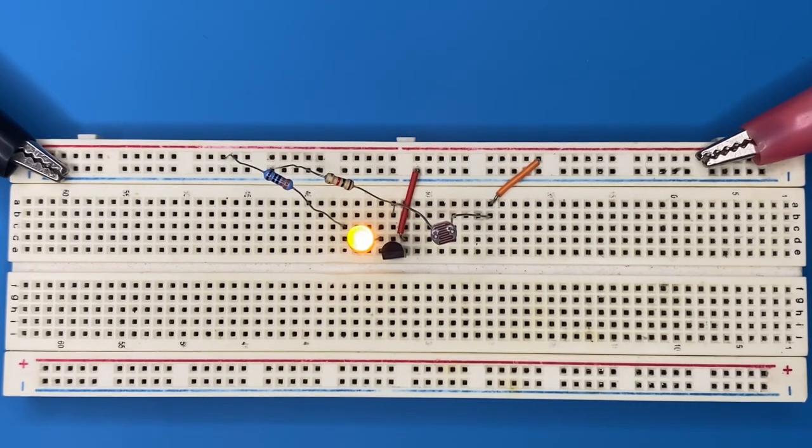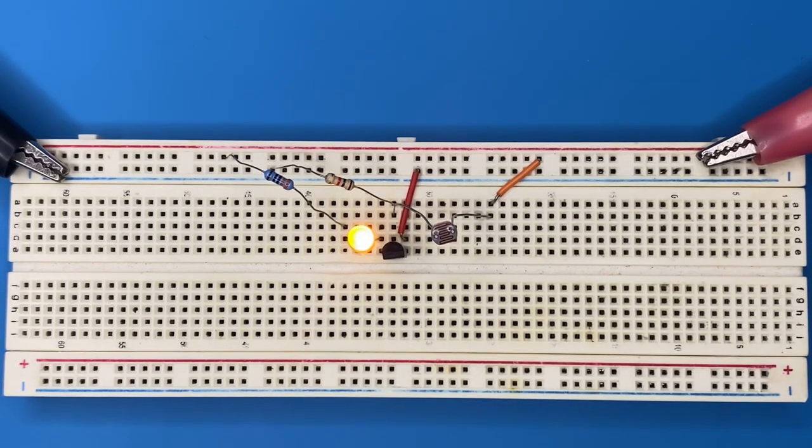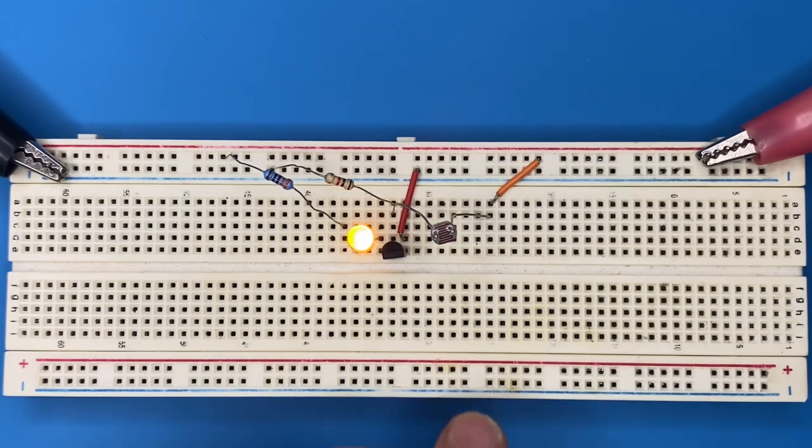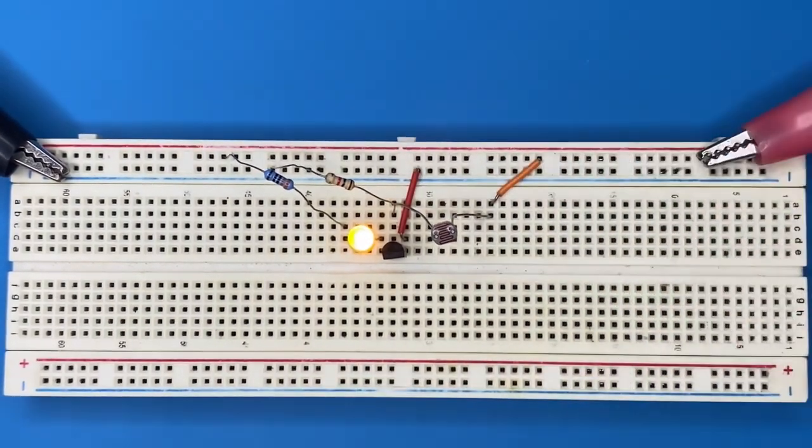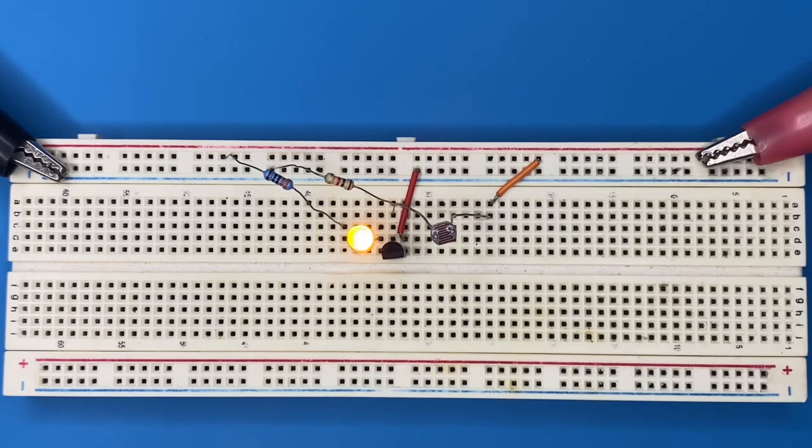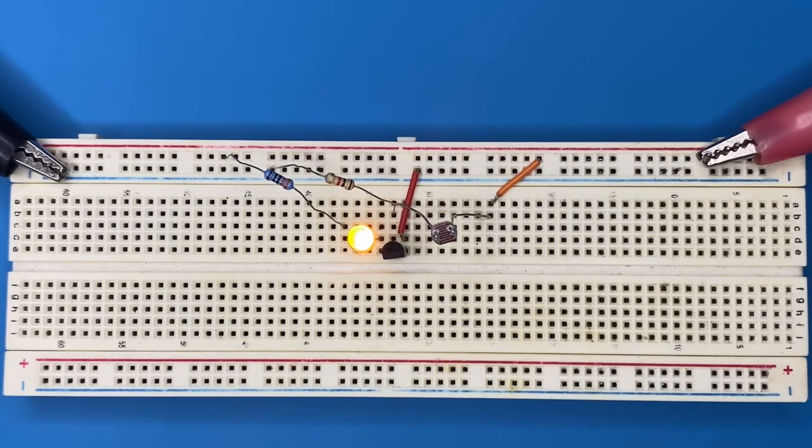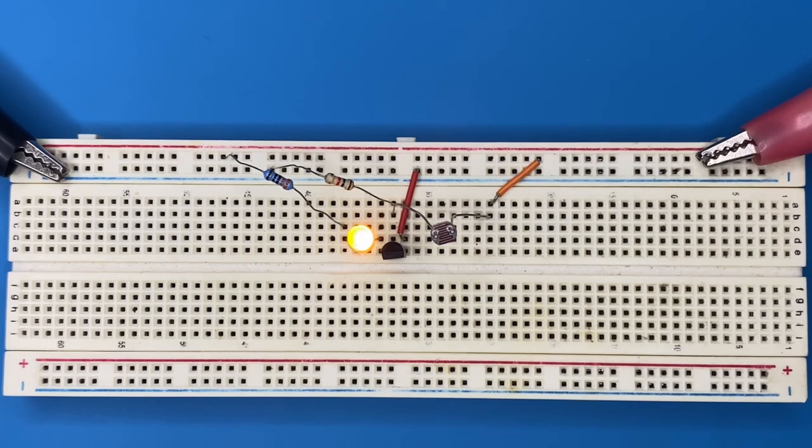The light dependent resistor works in two modes: dark mode and light mode. In dark mode, the LDR's resistance is very high. In light mode, the resistance decreases. When the resistance decreases, current can flow through the base of the transistor, which is the current case, and the transistor turns on.